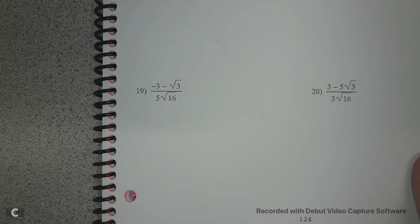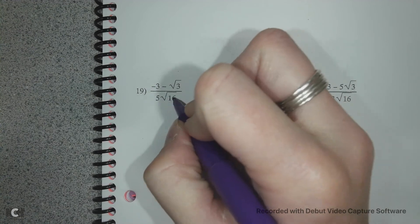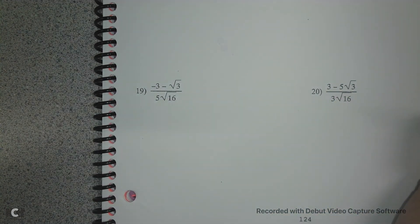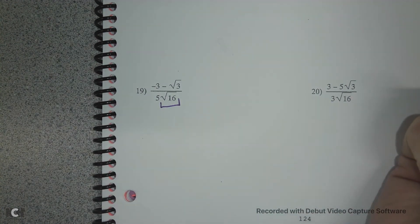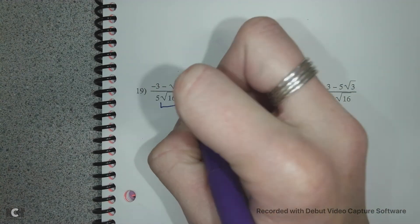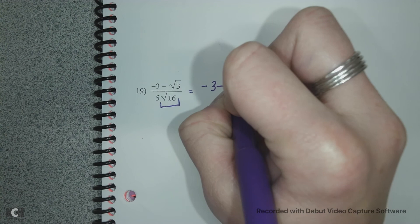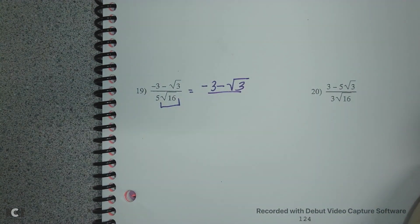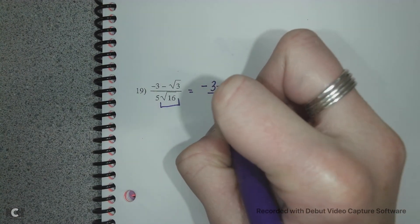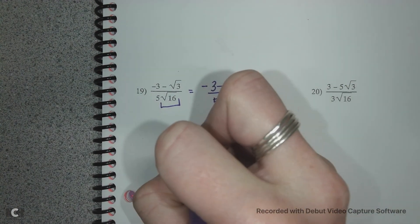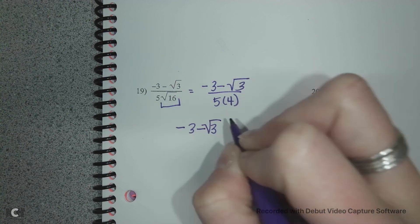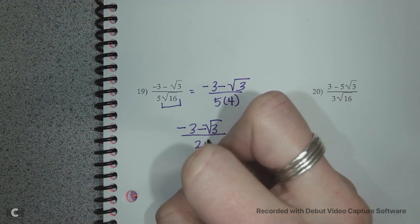Let's look at number 19. On number 19 again we want to multiply by the radical, but I realized that the square root of 16 is 4, it's nice. So I'm going to keep my numbers on the top, negative 3 minus the square root of 3. And then on the bottom I have 5 times 4 which is 20, so I have negative 3 minus root 5 over 20.